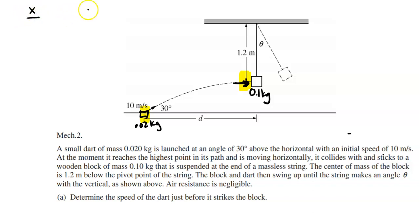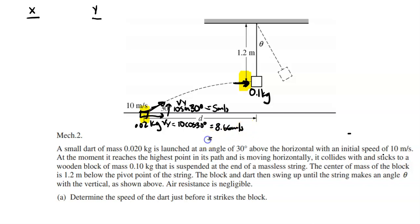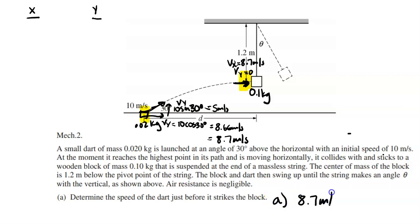Looking at the x and y directions, the speed is 10 meters per second. The y-component is 10 sine of 30 degrees, which is 5 meters per second. The x-component is 10 cosine of 30, which is 8.66 — rounding to 8.7 meters per second. At the highest point, the y-velocity is zero and the x-velocity is 8.7 m/s. The answer to part A is 8.7 meters per second, worth one point.